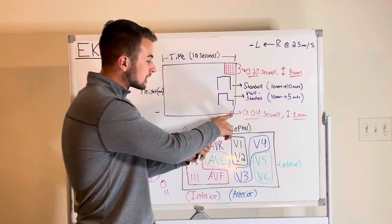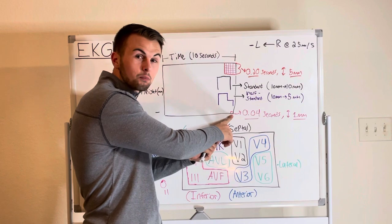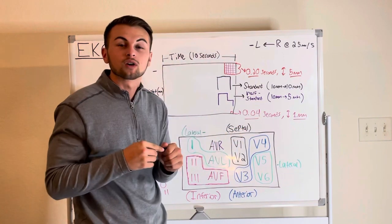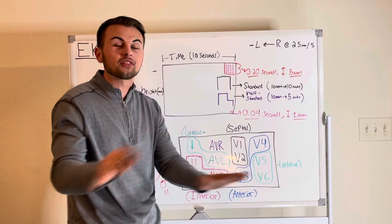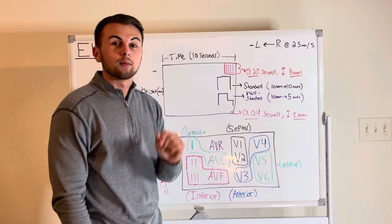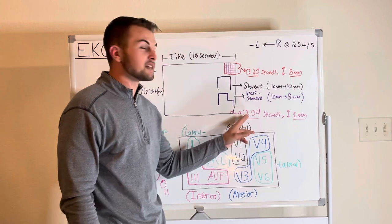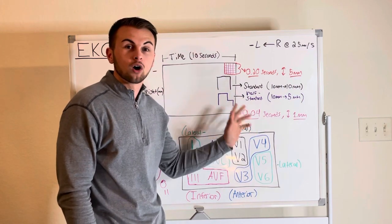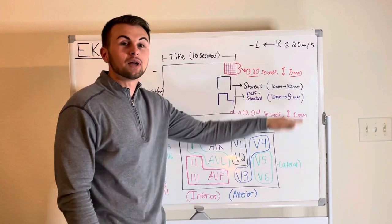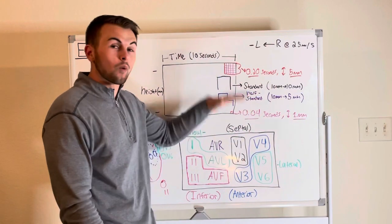Now each little box or small box is 0.04 seconds. If you remember nothing else from this video lecture remember that each little box in the EKG is 0.04 seconds. Also it is one millimeter in height on the y-axis.